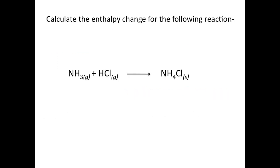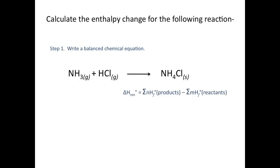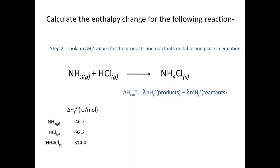Let's look at another example: calculate the enthalpy change for the reaction of ammonia plus hydrochloric acid producing ammonium chloride. First, check that the equation is balanced — in this case it already is. The next step is to plug our ΔHf° values into the equation for products and reactants.